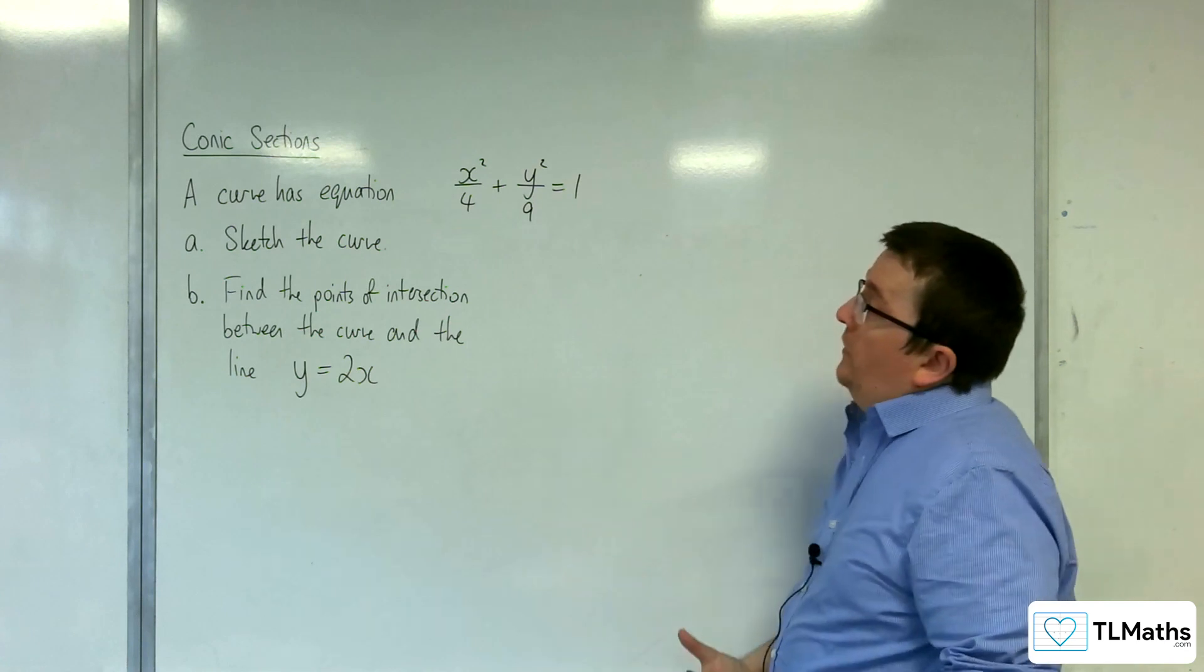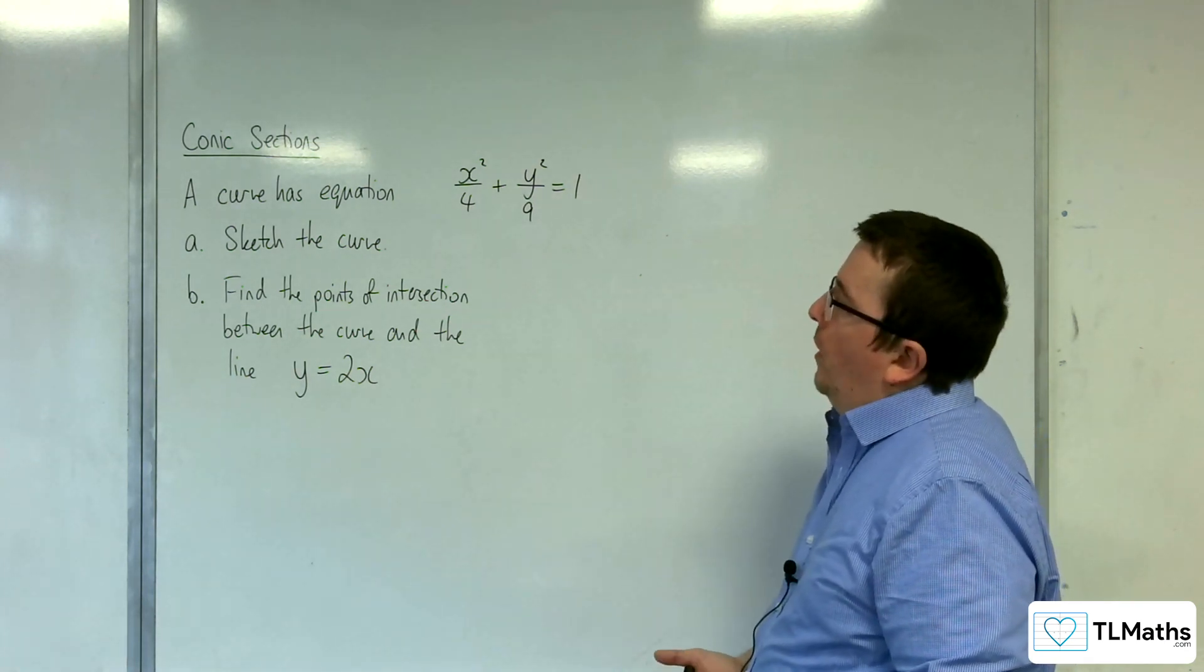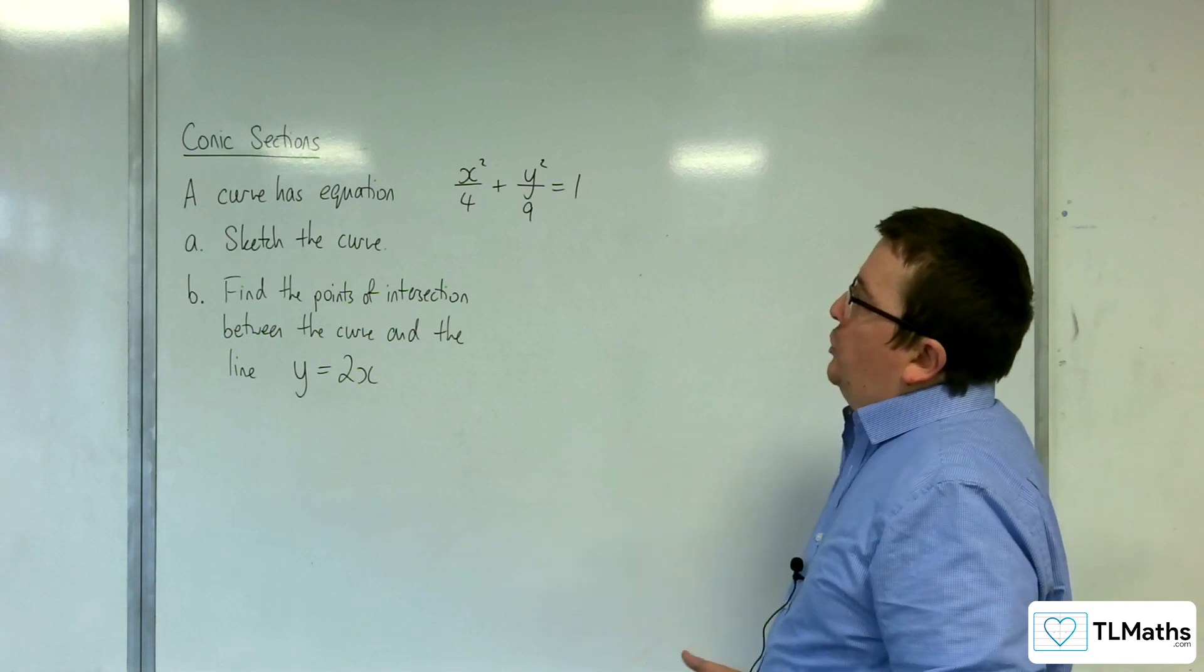In this question, a curve has equation x squared over 4 plus y squared over 9 equals 1. So part A, sketch the curve.